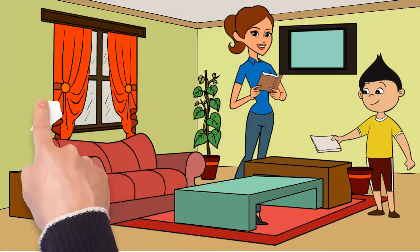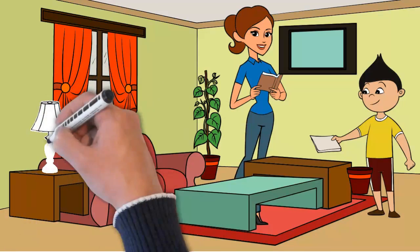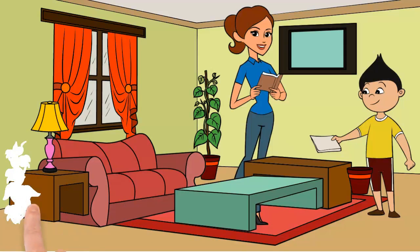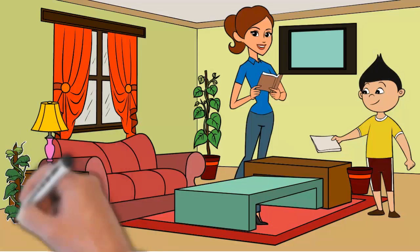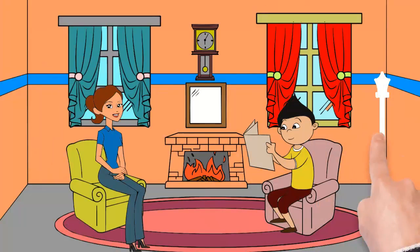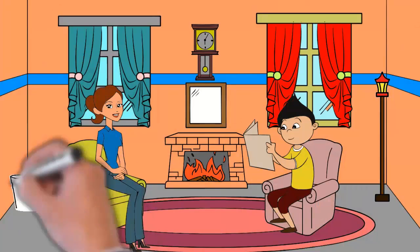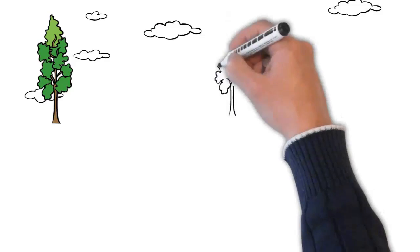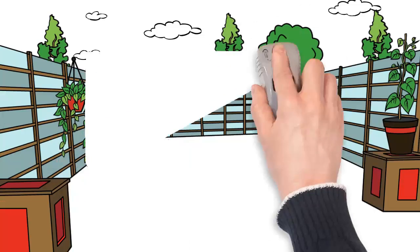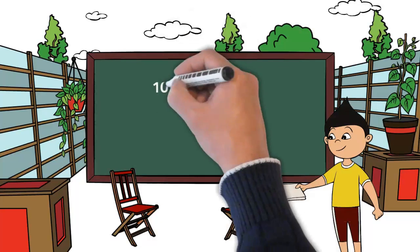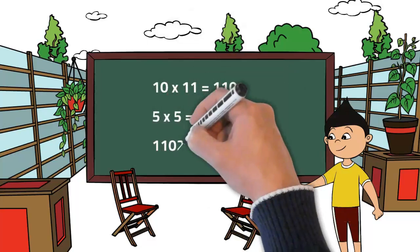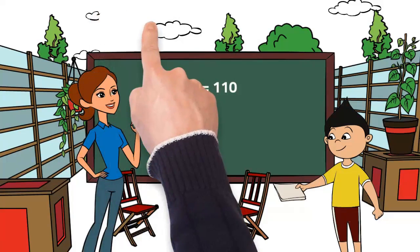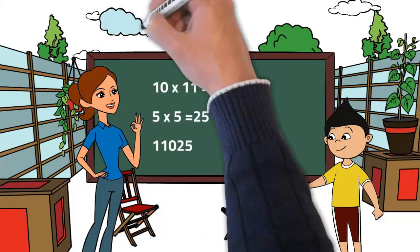Harry, can you tell square of 105? Yes, square of 105 is 11,025. Correct. How? That is, square of 105, 5 into 5 is 25, multiply 10 and 1 more than 10, that means 10 into 11 is 110. So answer is 11,025. Well done, Harry.